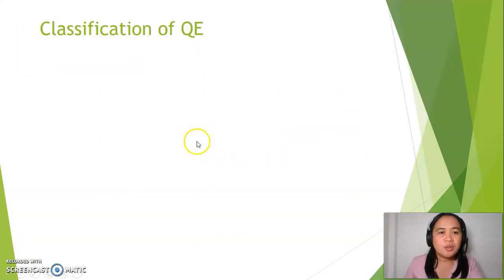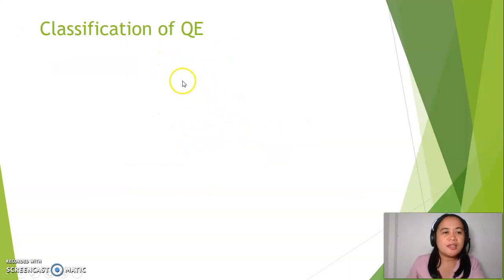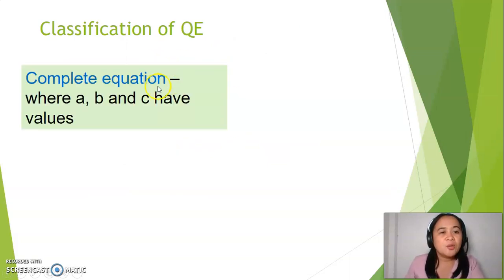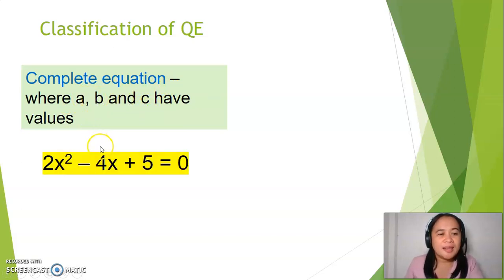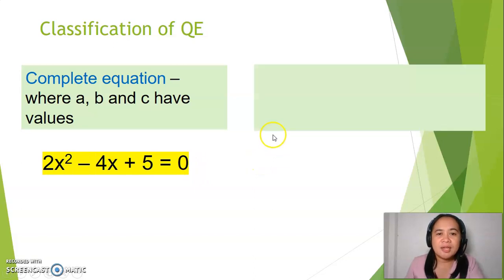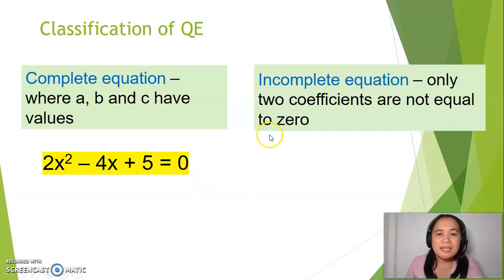There are two classifications of quadratic equations. The first one is a complete equation, where a, b, and c have values. An example is 2x squared minus 4x plus 5 equals 0. The second classification is an incomplete equation, where only two coefficients are not equal to 0.